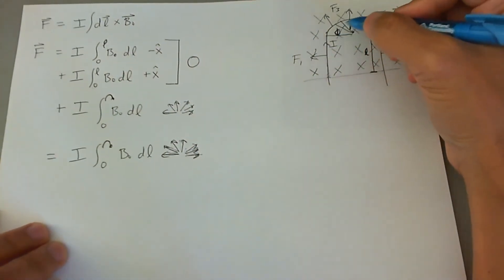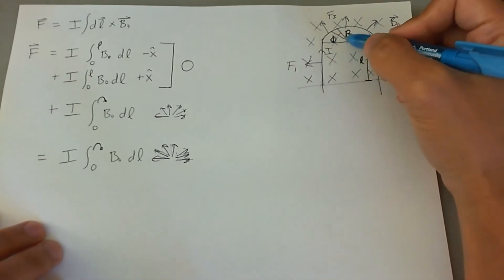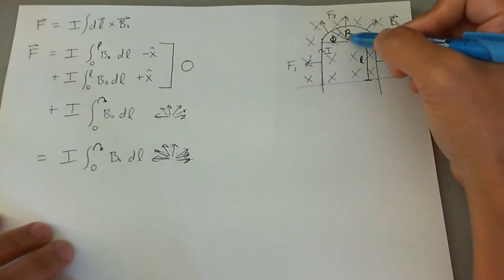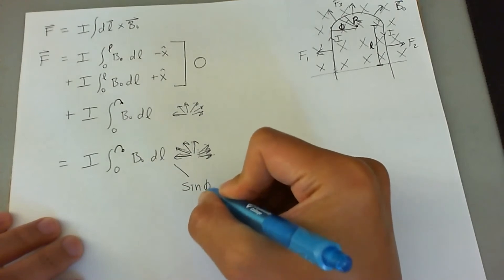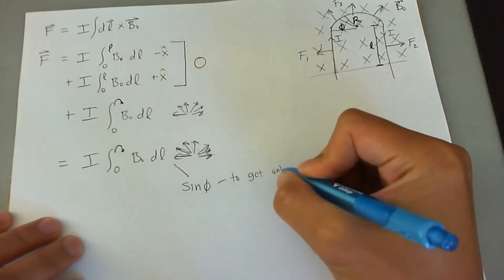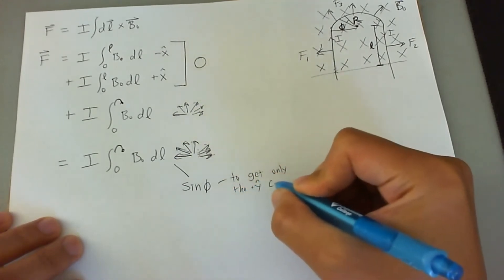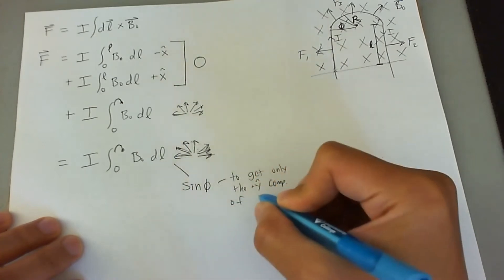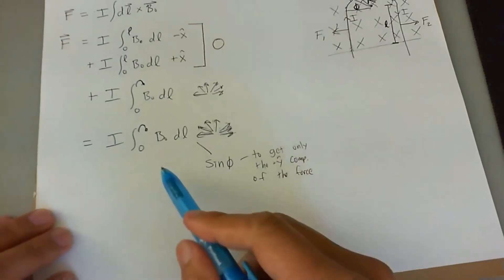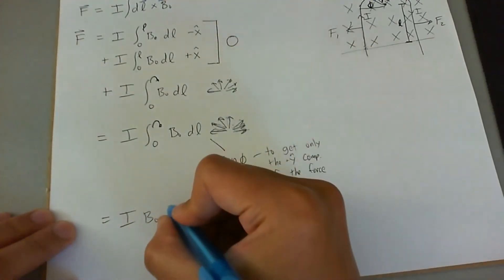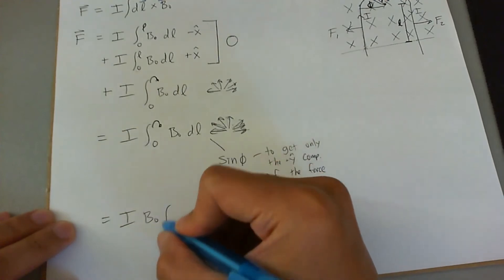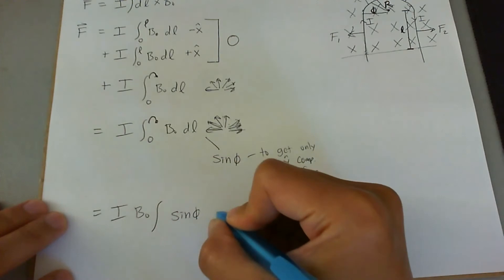So looking at this phi, this is a great way of utilizing the phi that's in the problem. The y component is going to be sine phi function of the entire term that simulates the force acting on this part of the loop. So you would multiply in sine phi to get only the y component of the force. So this equation now simplifies to I, and we'll take B0 out since that doesn't change with integration, sine of phi dl.